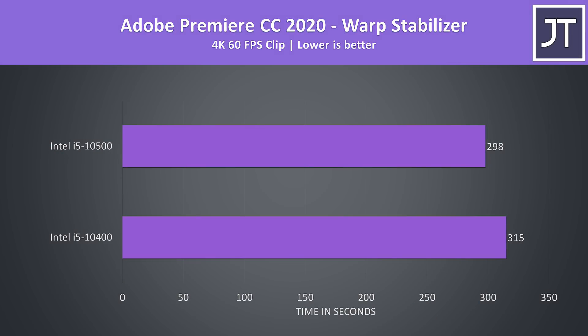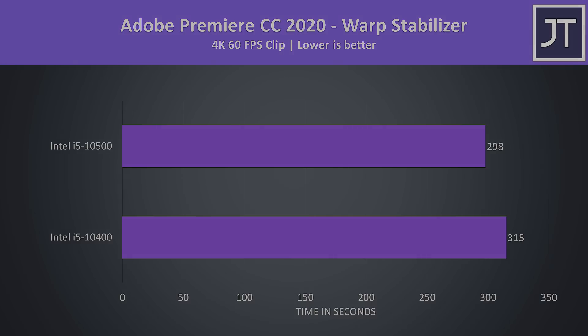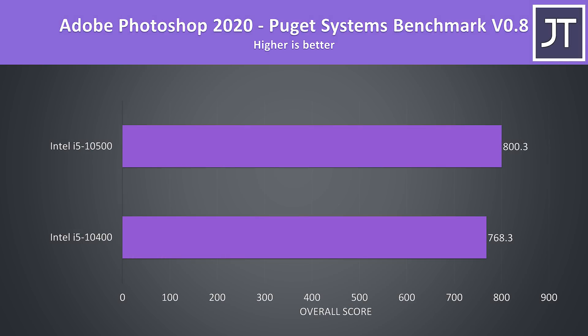I've also tested the warp stabilizer effect in Adobe Premiere, which is a less threaded workload used to smooth out a video clip. Like we saw in some of the single core results earlier, there was an above-average 6% performance boost with the 10500. Adobe Photoshop was another test using the Puget Systems benchmark tool, and was another where the 10500 was scoring just 4% higher than the cheaper 10400.